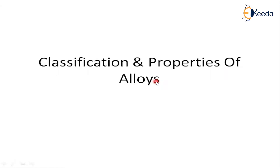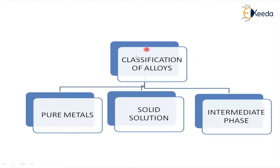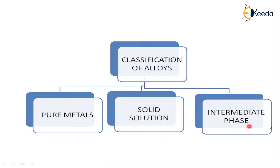Let us see the classification of alloys and their properties. If you observe here, the basic classification starts with pure metals. Pure metal is also considered an alloy because it is having 99% of pure metal and 1% of other materials. The next one is solid solution, and the third one is intermediate phase. These are the three different types of alloys under the classification of alloys.